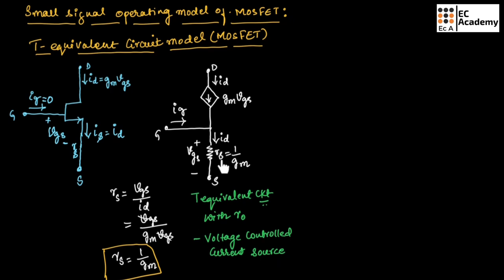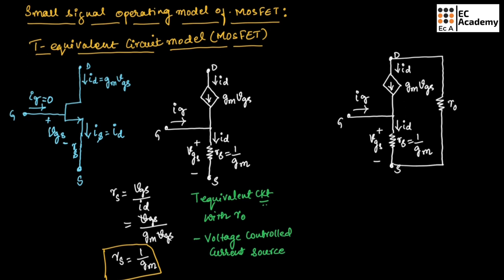We can write the same T equivalent circuit with internal resistance R0 by connecting the resistance between drain and source terminal. When we connect an internal resistance R0 between drain and source, this is known as the T equivalent circuit with internal resistance R0.